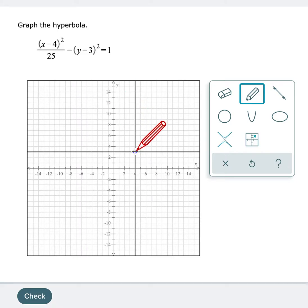And because it's horizontal, since my x is first, I have to either count to the left or to the right 5. So 1, 2, 3, 4, 5.